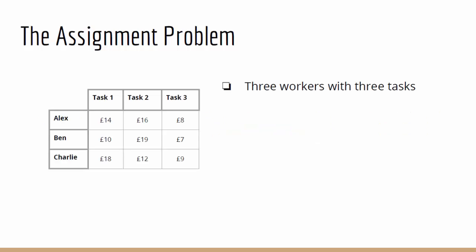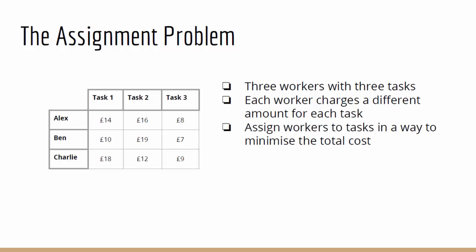Here's a brief example. Say we have three workers, Alex, Ben and Charlie, who each charge a price to complete tasks 1, 2 or 3. As each worker charges different amounts for different tasks, there must be a way to assign them to tasks so that the total cost is minimized.